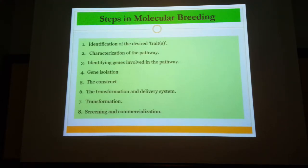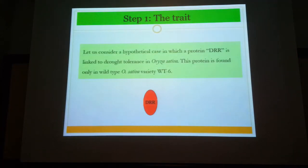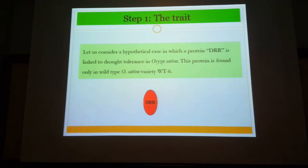Although this looks simplistic, the process is very complex. As a hypothetical example, we have a protein called DRR which is linked to drought tolerance in rice, or Oryza sativa.